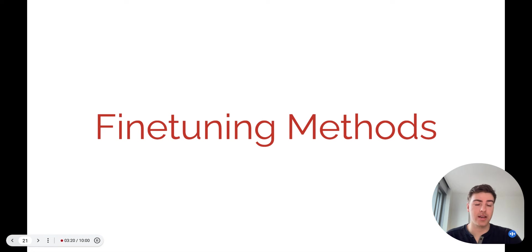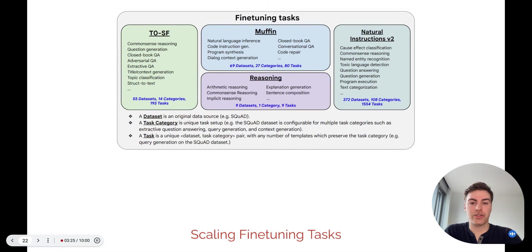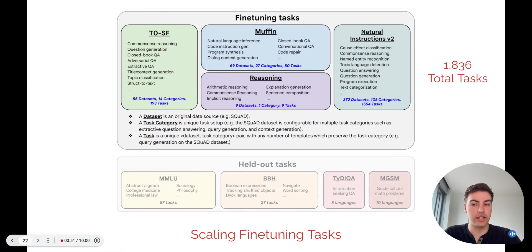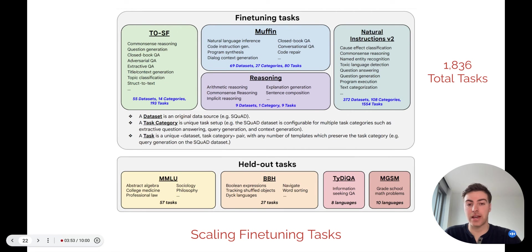Here I'll walk through our fine-tuning datasets and methods in more detail. The original instruction tuning in FLAN used only 62 unique tasks. We expand this with new dialogue and program synthesis tasks, creating Muffin, and then merge this with new chain-of-thought reasoning tasks and subsets of two other massive task collections, T0 and Natural Instructions V2. In total, this yields 1,836 tasks. Separately, we maintain held-out tasks for evaluation, unseen at training time.